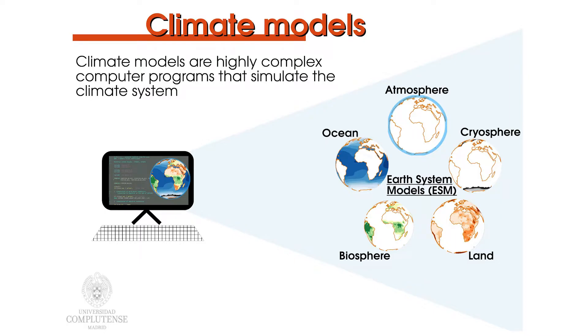At the core is a general circulation model that represents the processes that take place in the atmosphere and ocean as well as their interactions. To do so, they rely on knowledge of fluid mechanics and thermodynamics that have been developed since the 18th century and that are framed in mathematical formulations. These formulations are translated into computer programs that numerically approximate the evolution of climate-relevant variables using high-performance computers.